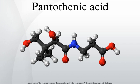Biological role: Only the dextrorotatory isomer of pantothenic acid possesses biologic activity. The levorotatory form may antagonize the effects of the dextrorotatory isomer. Pantothenic acid is used in the synthesis of coenzyme A. Coenzyme A may act as an acyl group carrier to form acetyl-CoA and other related compounds, serving as a way to transport carbon atoms within the cell. CoA is also important in the biosynthesis of many important compounds such as fatty acids, cholesterol, and acetylcholine.